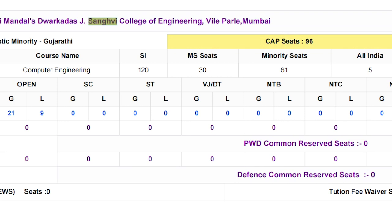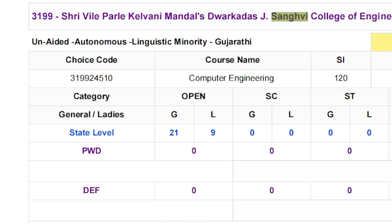For open category: general is 21 seats and ladies have 9 seats reserved. The main important fact here is that you will not find caste reservation in this college. SC, ST, and all other caste seats show 0 seats — meaning you will find only two types of seats here: MHT-CET Maharashtra state seats (30) and minority seats (61). PWD seats are also 0 and EWS seats are 0, but TFW seats are 6.